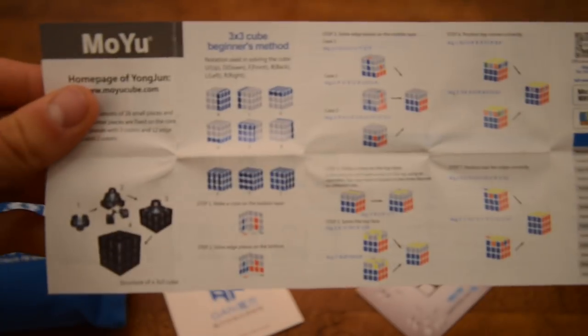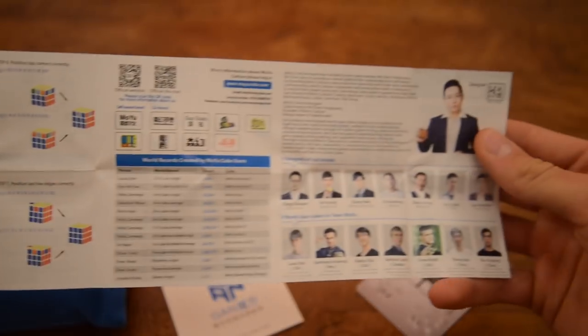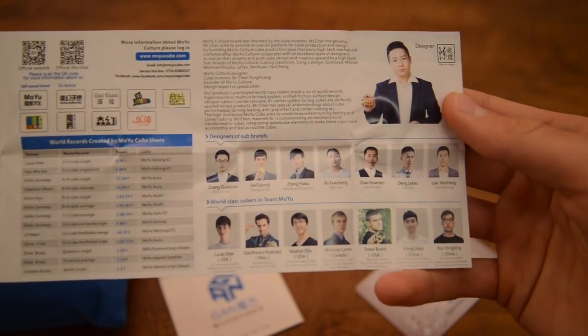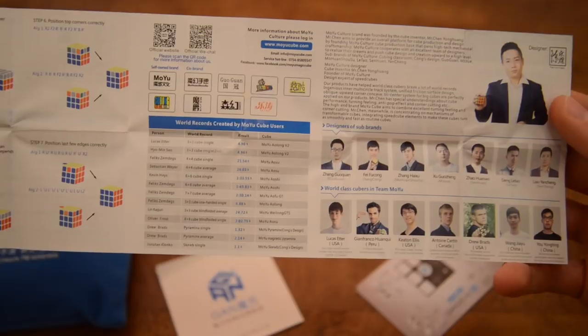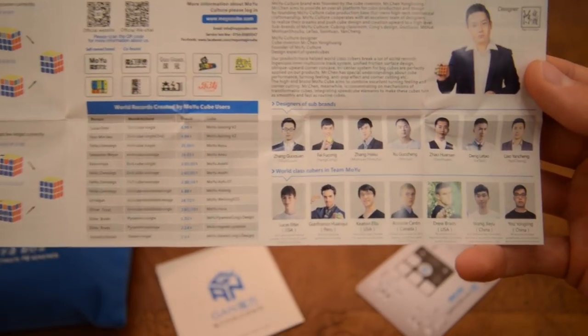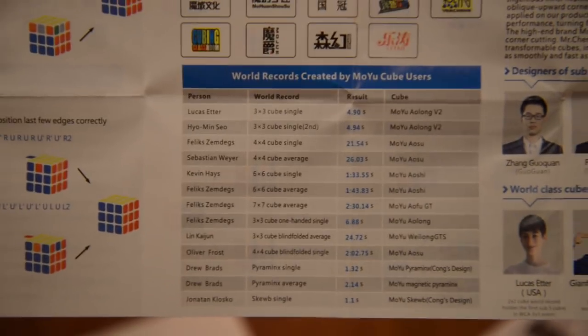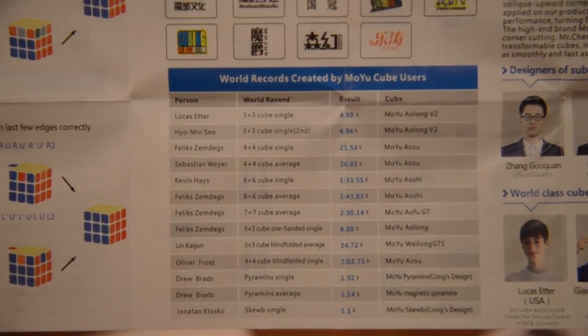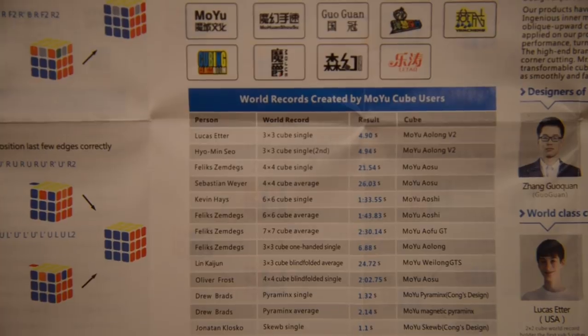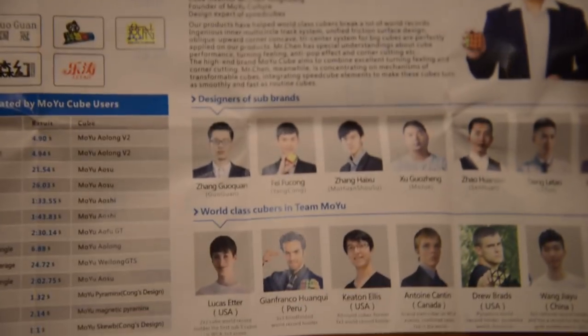And then we have the way to solve it and the 3x3 beginner method it says, and the designers and the world-class cubers that... Wait, what? So basically there are a lot of cool information about the cubing world, the world records as you can see. Wait, Lucas Etter got the world record. So it's a little outdated, as you can see. But there are a lot of cool things in this package.